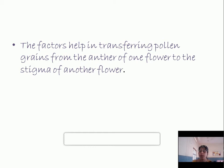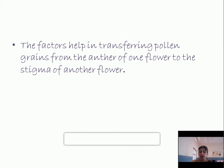Pollinators can be abiotic — that is non-living — or biotic — that is living. Abiotic pollinators are wind and water. Water is usually used only for a few aquatic plants like sea grasses and hydrilla. Biotic pollinators refer to various animal species such as mammals, reptiles, birds, and insects. Insects are the most common — beetles, bees, moths, and birds are examples of biotic pollinating agents.